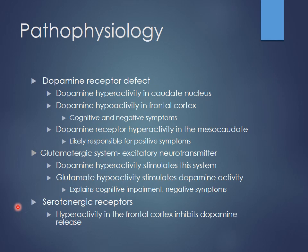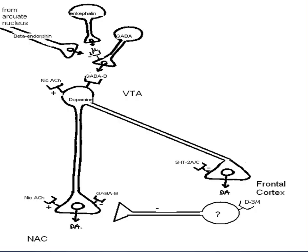Serotonin is going to be a big component of the second-generation, atypical antipsychotics — serotonin blocking effects are really big with those. There's probably hyperactivity in the frontal cortex that actually inhibits dopamine release. It's complicated, but we'll keep it simplified for the purposes of the drugs we're going to use.